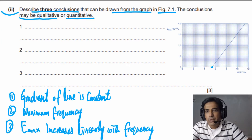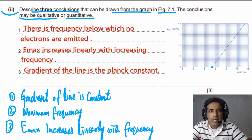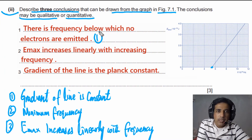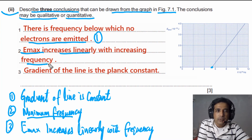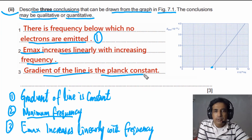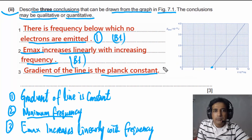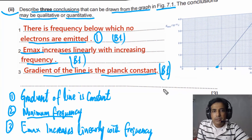In your written answer, mention: first, there is a frequency below which no electrons are emitted; second, Emax increases linearly with increasing frequency; and third, the gradient of the line is constant and equal to Planck's constant. This question carries three marks — one B mark for each point.